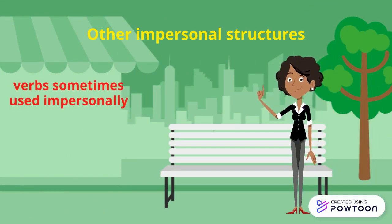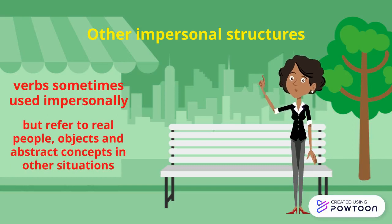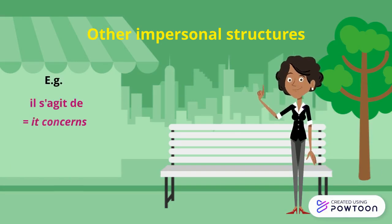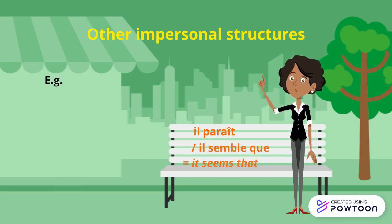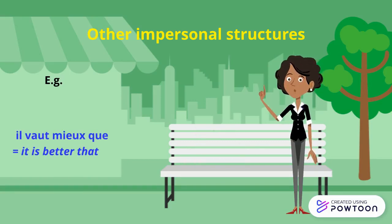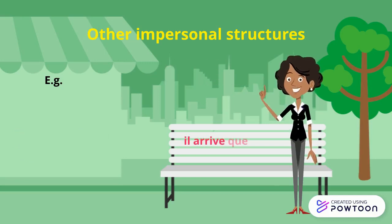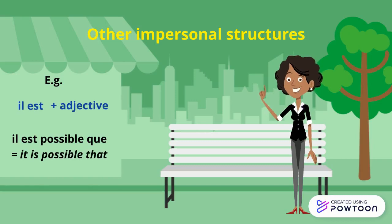Some verbs are sometimes used impersonally, but can refer to real people, objects, and abstract concepts in other situations. For instance: il s'agit de (it concerns), il paraît / il semble que (it seems that), il vaut mieux que (it is better that), il se peut que (it is possible that), il arrive que (it happens that), and il est followed by an adjective — such as il est possible que (it is possible that), or il est facile de (it is easy to).